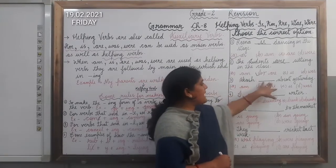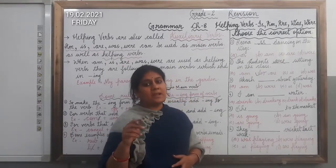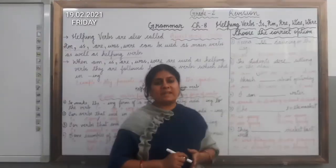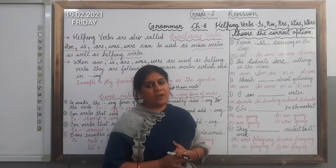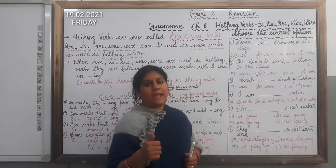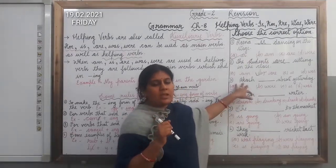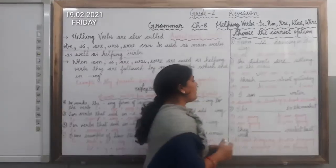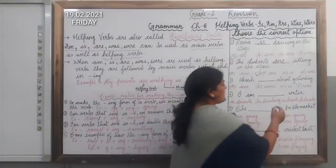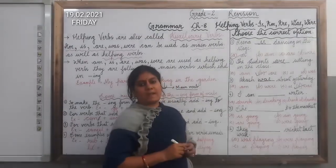Now the third question is: Akash ___ absent yesterday. Now children, we are talking about yesterday — yesterday means the day which has already gone, so this sentence is in the past tense. In the past tense, which helping verbs do we use? Yes, we use was and were. Was is used for the singular noun and were is used for the plural. Here we are talking about Akash — Akash is only one, singular noun. So which helping verb will we use? Yes, we will use was. The answer is: Akash was absent yesterday.